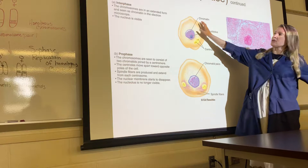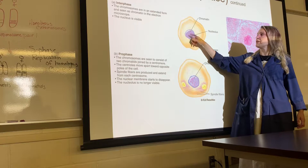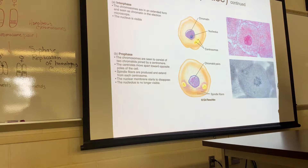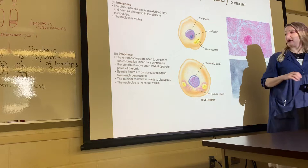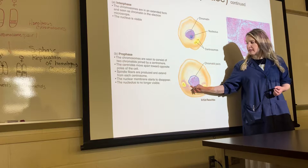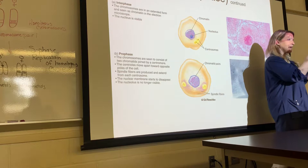Looking at mitosis: our cell starts out in interphase with the nuclear membrane visible and chromatin material present. By G2, we have more organelles and replication has taken place, giving us sister chromatids. Now we enter the first phase of mitosis — prophase — where we start to see the nuclear membrane disintegrate, and the chromatin becomes highly condensed so you can really see the chromosomes.